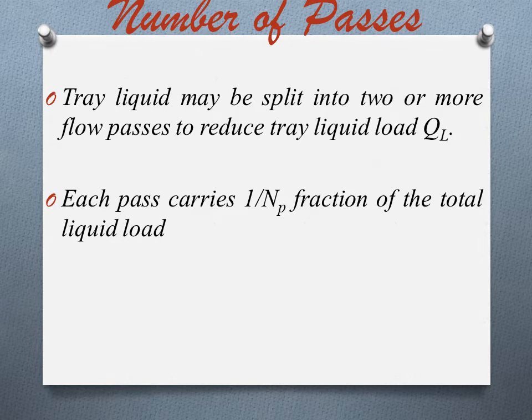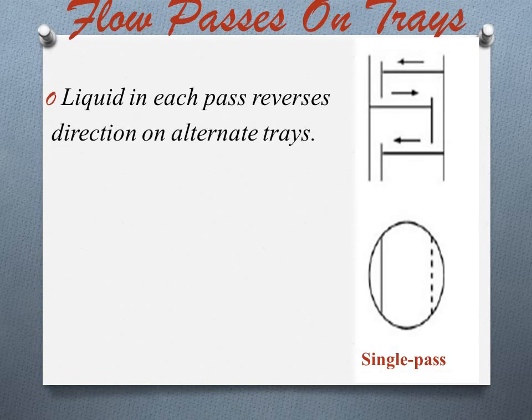Tray liquid may be split into two or more flow passes to reduce tray liquid load, say QL. Suppose NP is the number of passes, then each pass carries 1/NP section of the total liquid load. For example, 1/4 in 4-pass trays. The figure shows the single pass arrangement, where liquid in each pass reverses direction on alternate trays.